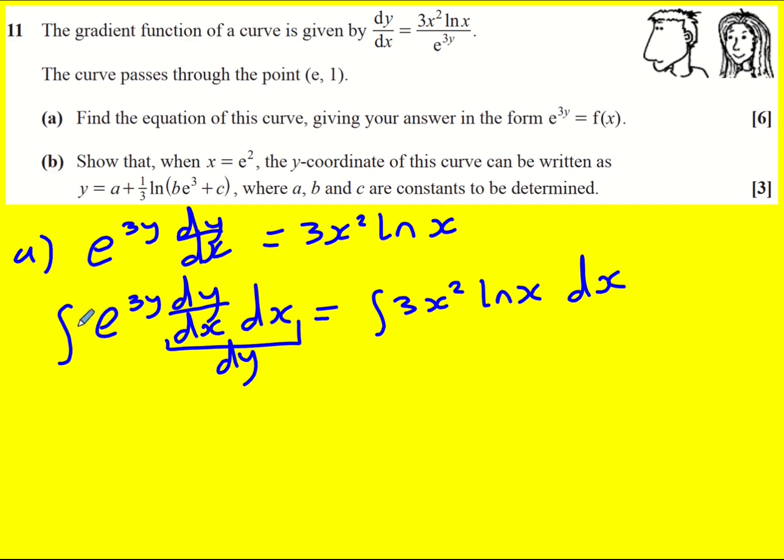So left hand side is not too bad. We're integrating e to the 3y with respect to y. We get e to the 3y and then we have to times by a third or equivalently divide by 3.